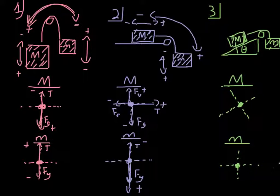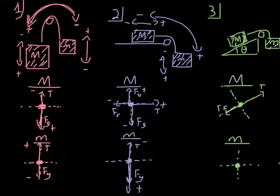Scenario three: I have a big mass on a ramp with angle theta. Something I haven't taught yet — don't worry too much — but for a mass on a ramp you'd actually tilt your axis to align with the ramp. For the big mass: tension goes up the ramp, friction pulls back down the ramp, gravity goes straight down, and normal force goes perpendicular to the surface. We'll go over ramps in more detail later — what we're really focused on now is tension and system positive versus negative.